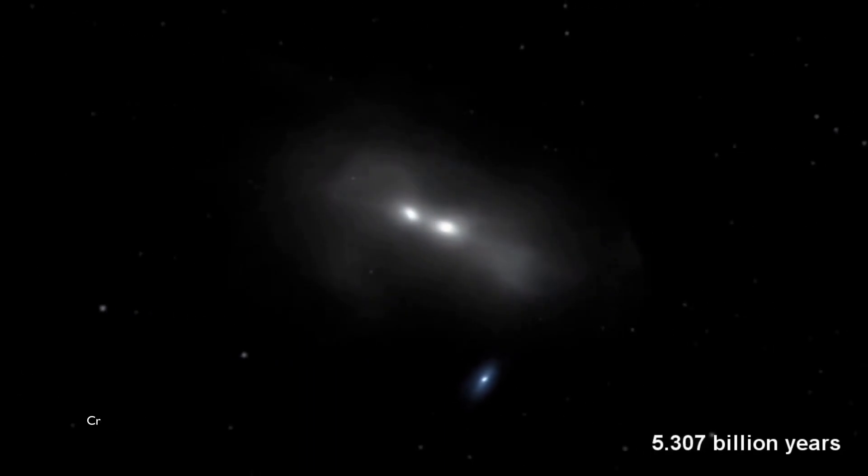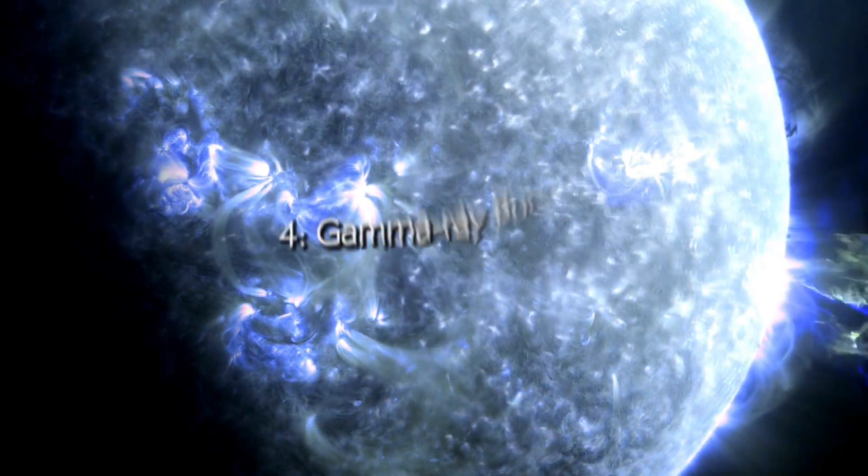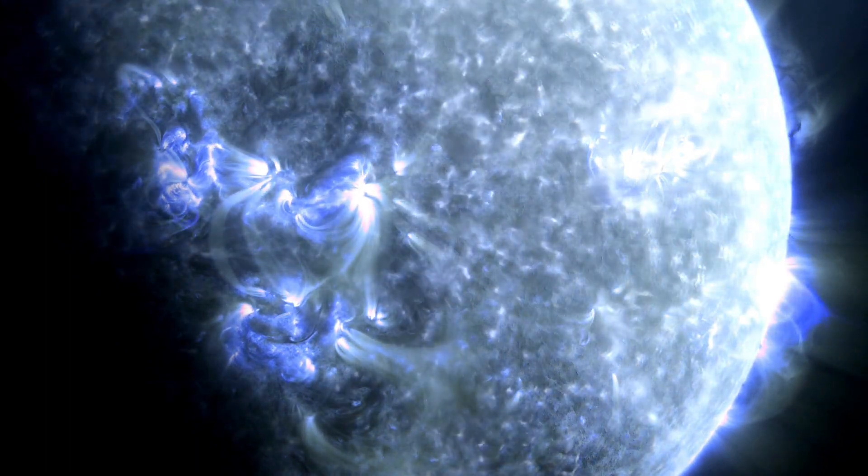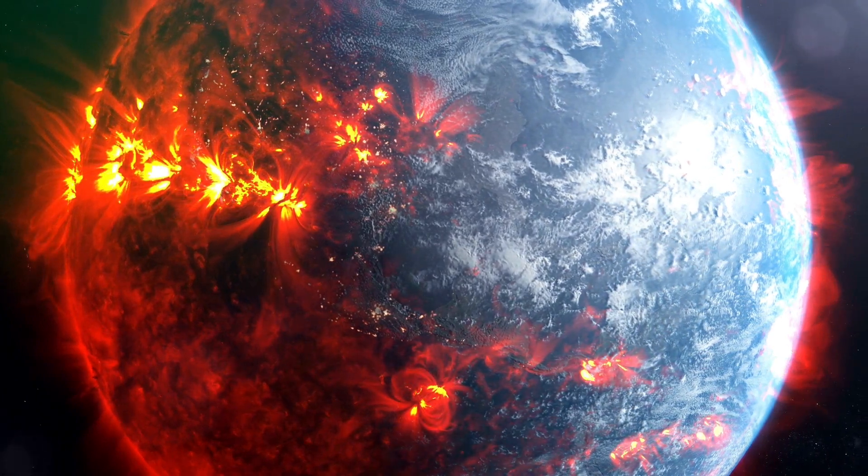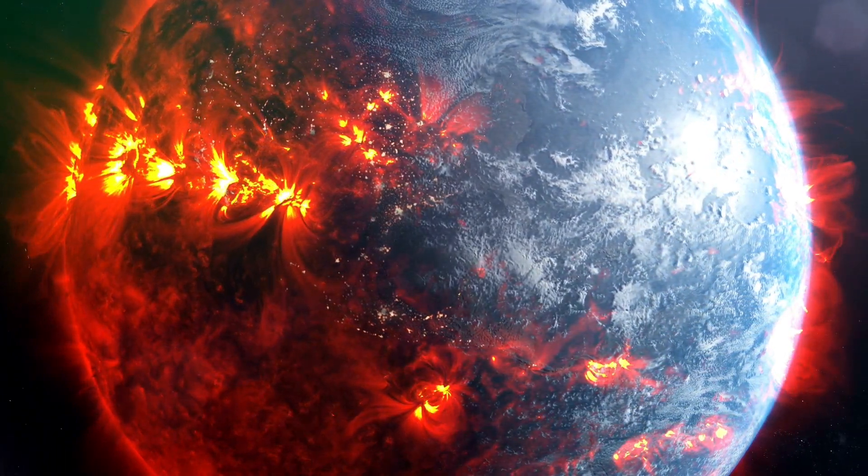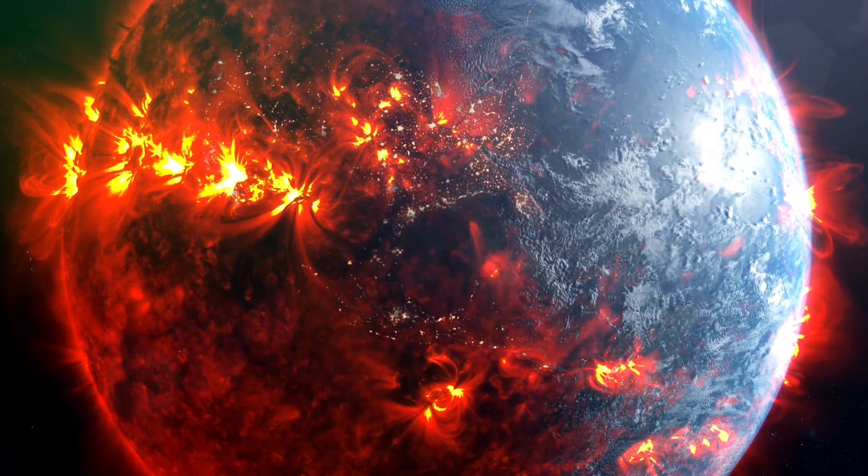But wait, there's more. Gamma-ray bursts are the universe's most powerful explosions, emitting more energy in seconds than the sun will in its entire 10 billion year life. If aimed at Earth, these bursts could cause mass extinctions by destroying our ozone layer and exposing life to deadly ultraviolet radiation.